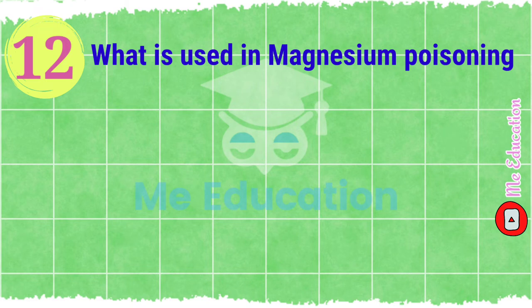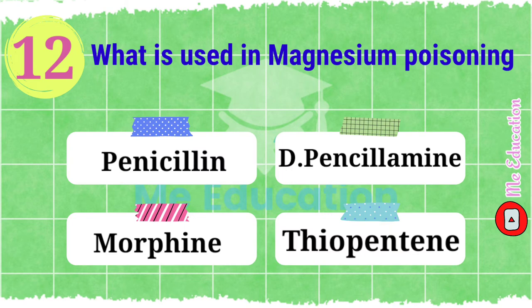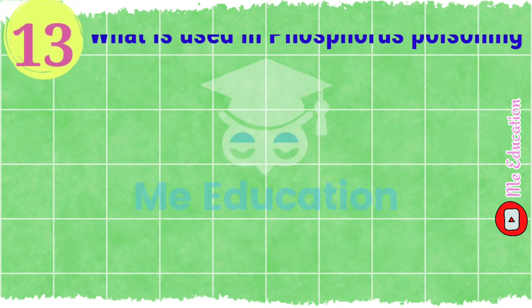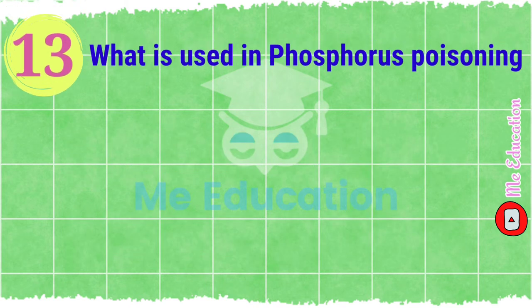Question number twelve: what is used in magnesium poisoning? Options: A) penicilline, B) D-penicillamine, C) morphine, D) ethionamide. The right answer is option B, D-penicillamine.